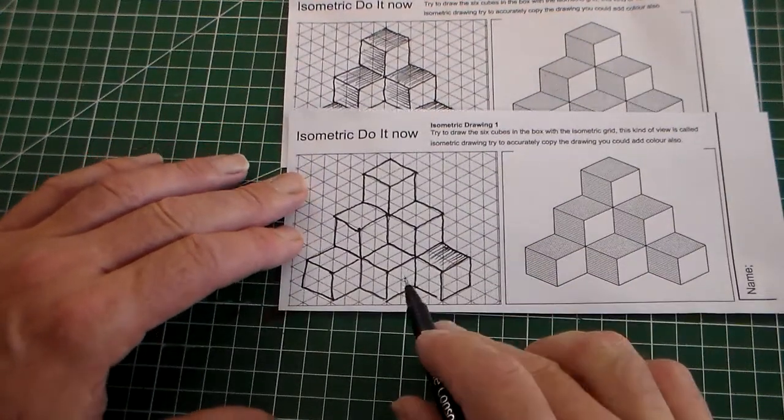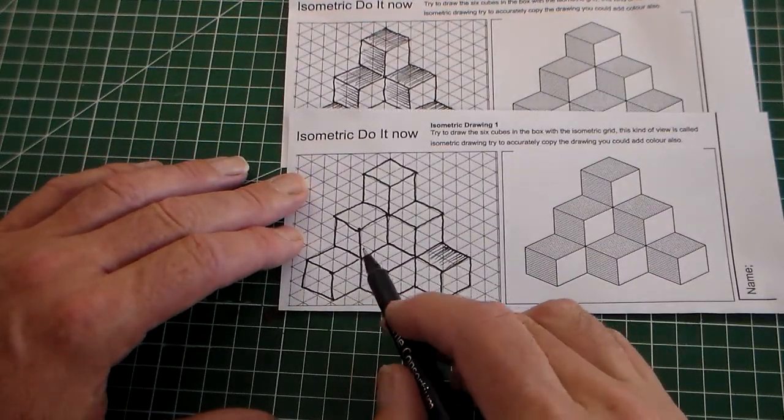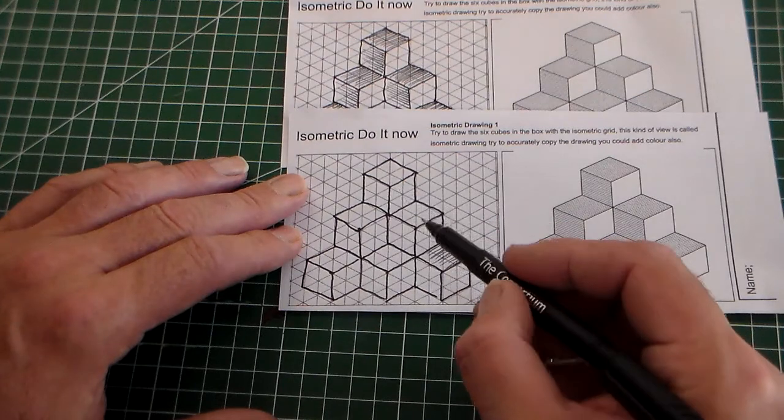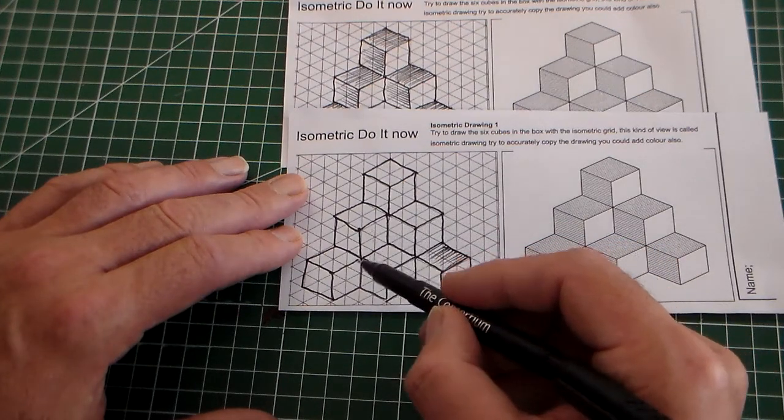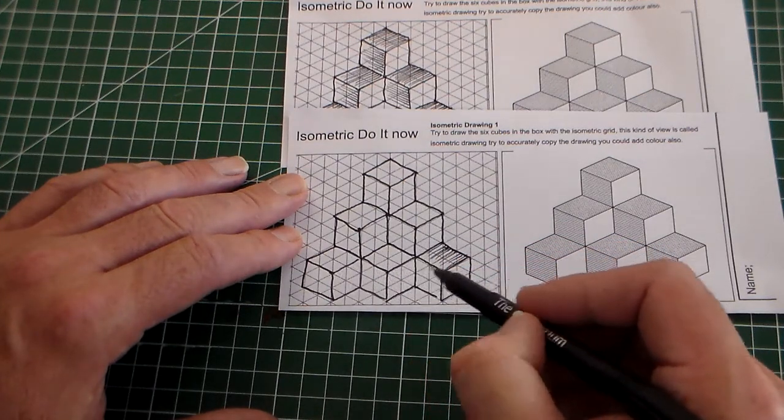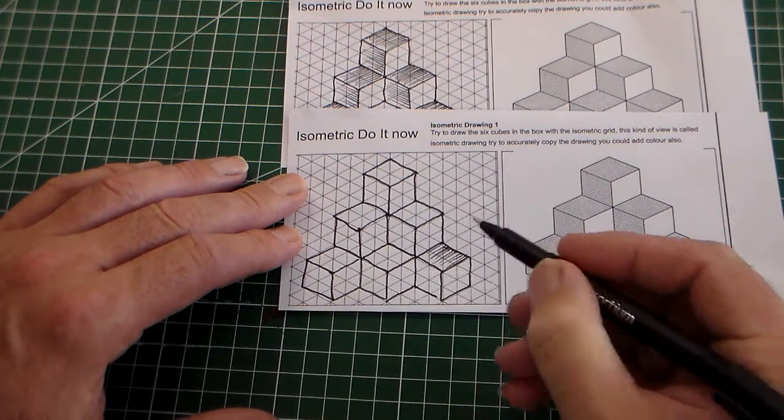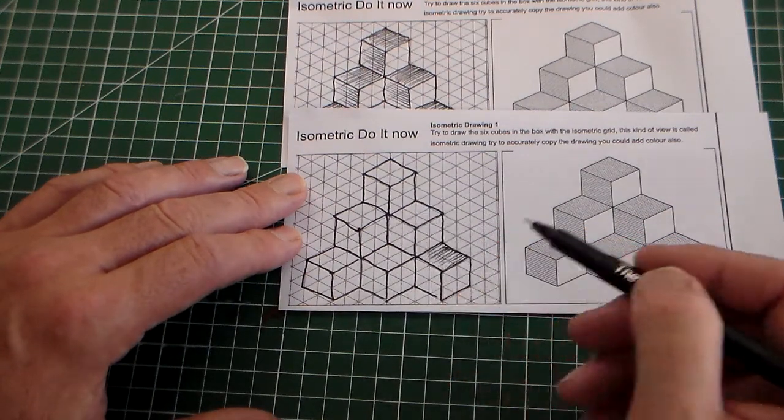And there's the finished cubes. So we've got one, two, three, four, five, six, if you like, cubes. So all you're really drawing is those six separate cubes.